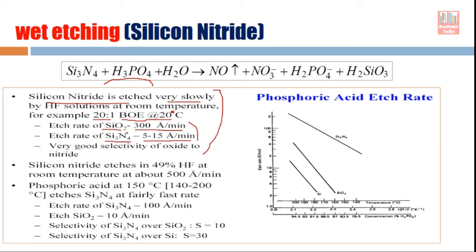Because of this large difference in etch rate, there is very good selectivity of oxide over nitride when using buffered HF. If you want to etch SiO2 while silicon nitride is present nearby — for example, below the silicon oxide — buffered HF is an excellent choice.